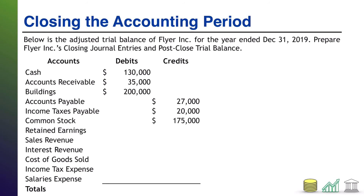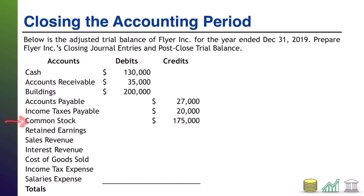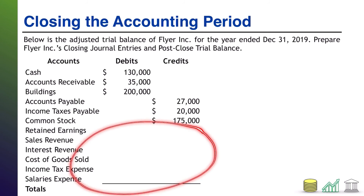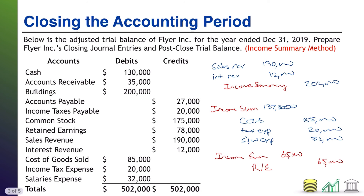No matter which method you use, the post-close trial balance will look the same. Notice I've kept my assets, liabilities, and common stock portion of shareholders' equity, and blanked out everything below to update based on those closing entries. As a result of closing entries: sales revenue zero, interest revenue zero, COGS zero, tax expense zero, and salaries expense zero.